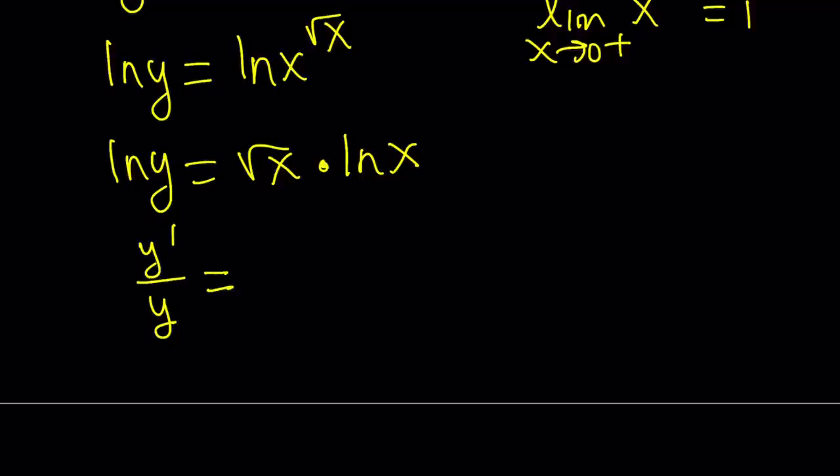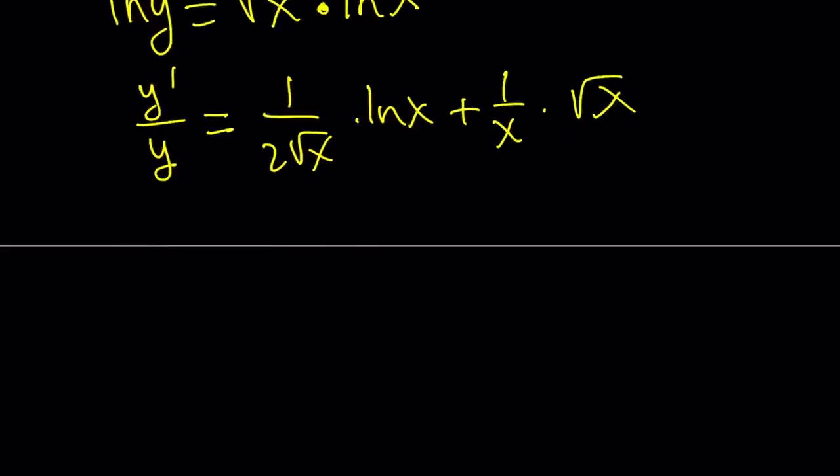I'm going to use the product rule on the right-hand side. The derivative of square root of x multiplied by LN x plus the derivative of LN x, which is 1 over x multiplied by square root of x. And from here, if you simplify this, you're going to get the following. To give a long story short,